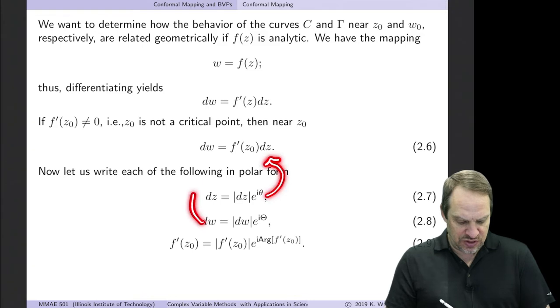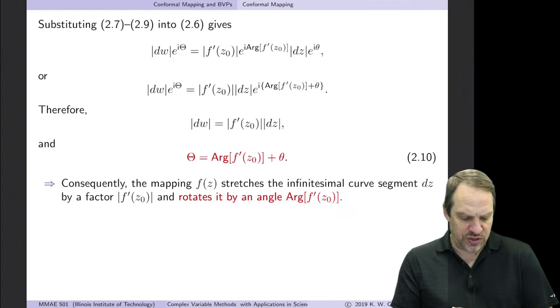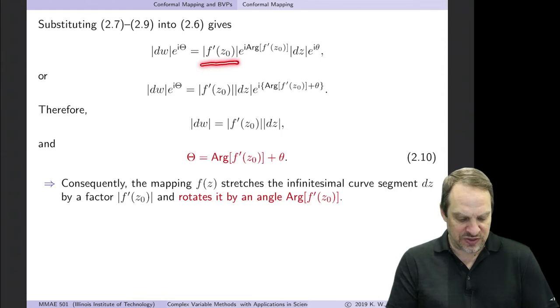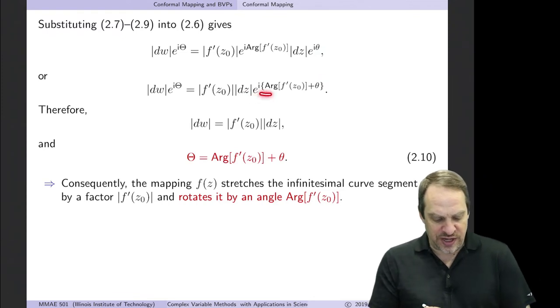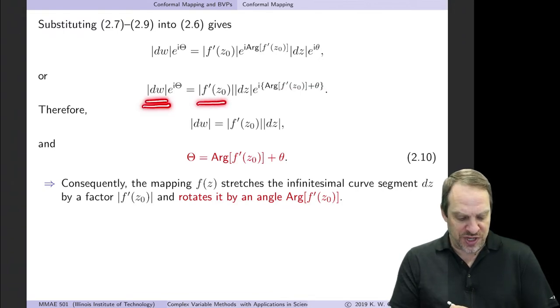So what we're going to do is substitute each of these into this equation 2.6. So that's what this is right here. So it looks like a mess, but let's break this down. So this was the dw. This is the f prime of z. And this is the dz. So let's just collect things together on the right-hand side. So we have the modulus of f prime of z₀ times the modulus of dz, and then we have e to the i times the argument of f prime times e to the iθ. So that becomes e to the i times the quantity arg f prime plus θ. So now the modulus of dw is the modulus of f prime of z₀ times the modulus of dz. That's this first relationship.